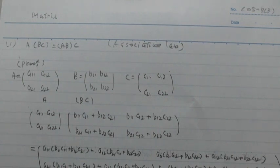A multiple BC equals AB multiple C. This is associative law. Proof.